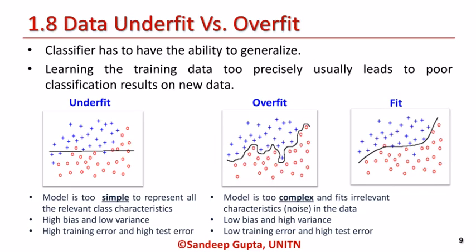A classification model must have the ability to generalize. Learning the training data too precisely usually leads to poor classification results on new data. Therefore, it is important to avoid under-fitting and over-fitting. If the model is too simple to represent all the relevant class characteristics, it will show high bias and low variance, resulting in high training error and an equal number of errors during testing. However, if the model is too complex and fits irrelevant characteristics, it will show low bias and high variance, resulting in low training error but high test error. Thus, it is important to design a fit model that neither under-fits nor over-fits.